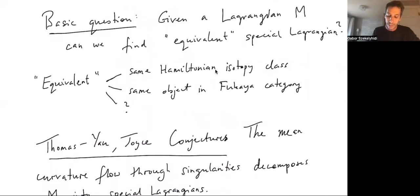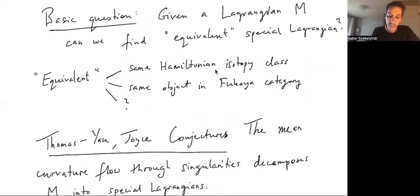Of course equivalent can be understood in different ways. At simplest maybe we want a special Lagrangian in the same homology class as M. This turns out to be not such a well-behaved problem. Maybe a slightly better one is find a special Lagrangian in the same Hamiltonian isotopy class, but it turns out that that's also not so good.